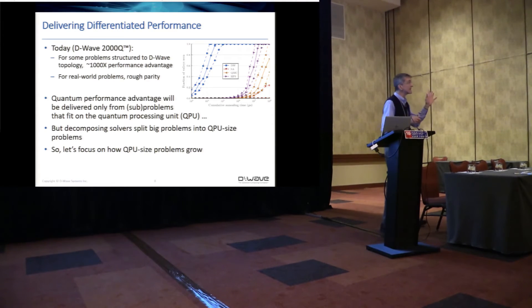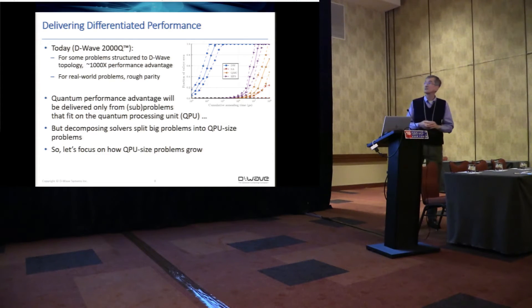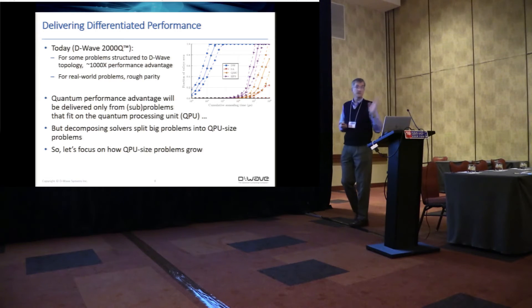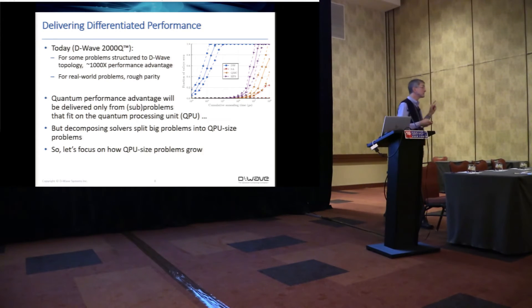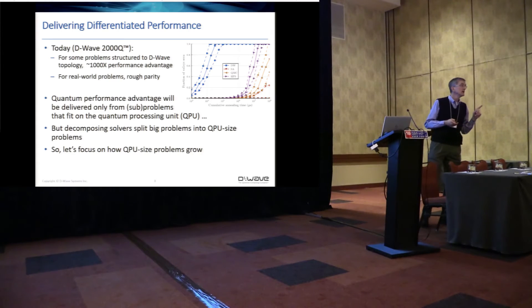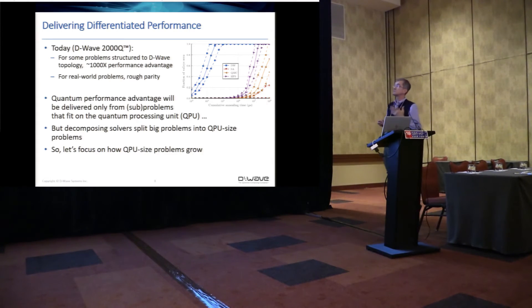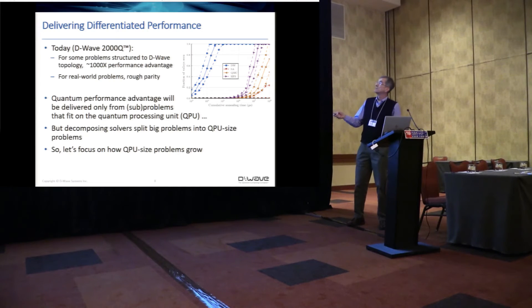So notice I used some caveats there. I said, for problems structured to the D-Wave topology, that's an important caveat, that we're able to deliver performance that's a thousand times better than the best classical processor. So if you think about it, the Cray 1 was probably 10 to a hundred times. I worked on the Cray T3E systems at Cray Research. I think we were probably really happy when we delivered a hundred times performance. This is a thousand X. That's a big number. And for real world problems, we lose quite a bit of efficiency. So we have work to do.